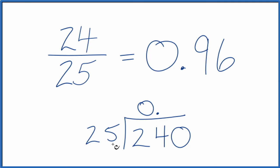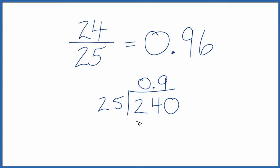How about 10 times 25 would be 250. So 9 times 25, that's 225. We subtract, we get 15.